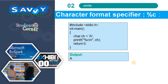To print a character, we declare ch as a character variable, read one character, and print it. The format specifier used is %c. Automatically, whatever value we enter will be read and that value will be displayed, as shown in the next slide.